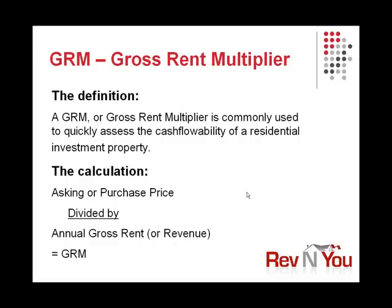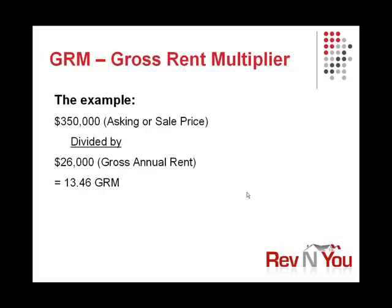So a quick example: $350,000 asking price divided by $26,000 in gross annual rent gives you a $13.46 GRM. Now, $13.46 is a bit high. In that case, you're probably going to have to put a larger down payment down to get it to cash flow, or you want to have really low interest rates and financing costs. Generally, we like to buy properties in the 7 to 11 GRM range, but do keep in mind that if you can get something around 10 GRM, you're probably going to have a cash flowing property.